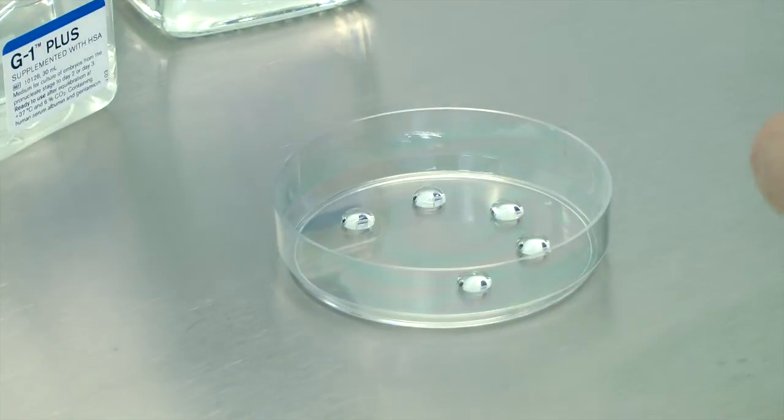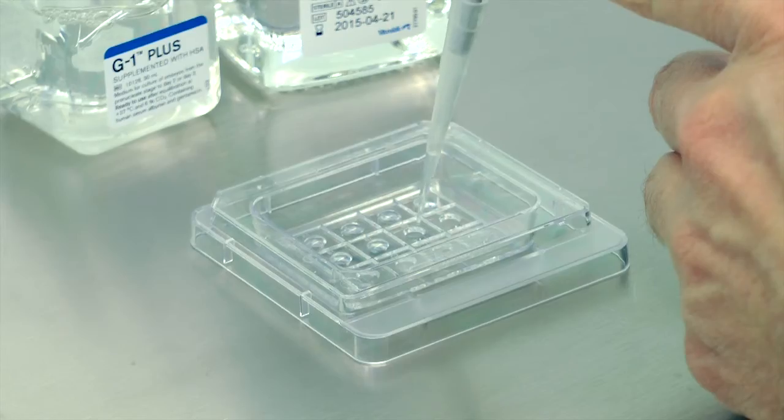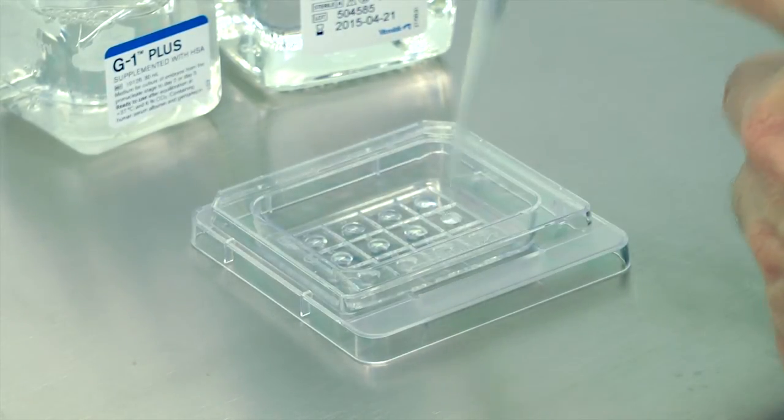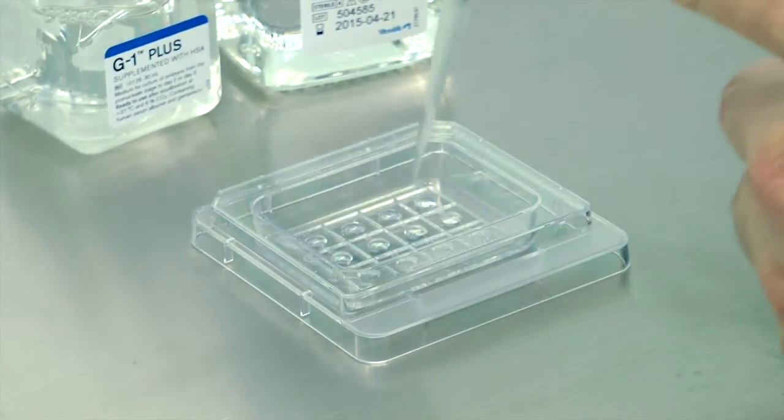You can culture up to 5 embryos in each of these droplets. Alternatively, if you use the micro droplet dish from Vitrolife, use 25 microliter droplets for the culture of 1 embryo per droplet.